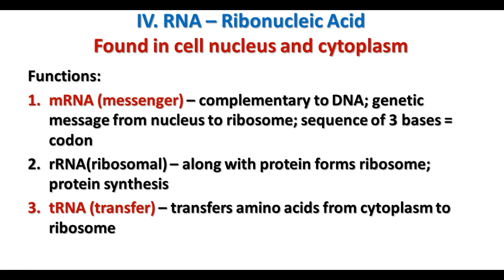Messenger RNA is complementary to the DNA. It matches up to part of the DNA molecule and carries the message from the nucleus to the ribosome — the genetic message coded in the DNA, the instructions for making proteins. It does this by means of sequences of three bases called codons. Each codon, each sequence of three bases, represents one particular amino acid. There are 20 amino acids and they can be put together in countless different ways to make lots of different kinds of proteins.